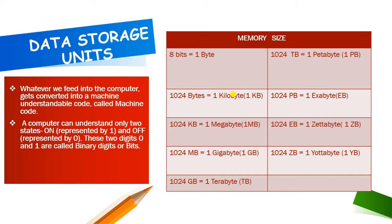On the right-hand side, the memory sizes are given. We have certain memory units: 8 bits equals 1 byte; 1024 bytes equals 1 kilobyte; 1024 KB equals 1 megabyte; 1024 megabytes equals 1 gigabyte; 1024 gigabytes equals 1 terabyte; 1024 terabytes equals 1 petabyte; 1024 petabytes equals 1 exabyte; 1024 exabytes equals 1 zettabyte; 1024 zettabytes equals 1 yottabyte. These are the measuring units for storing data in the computer.